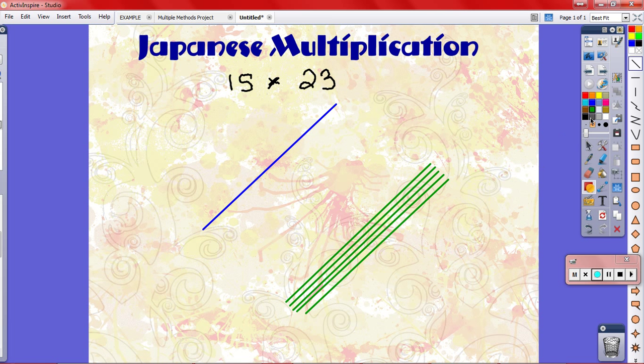Okay, now next I'm going to do my lines for 23. So I need two tens place lines, twenty, and then I need three ones place lines, twenty-three. One got a little bit broken, but that's okay. All right.